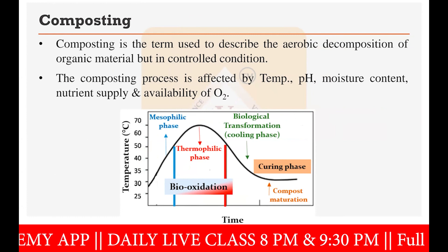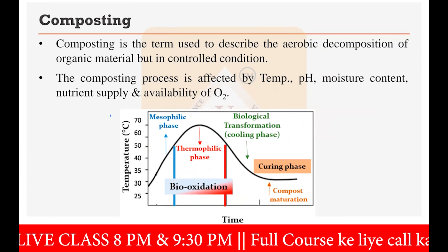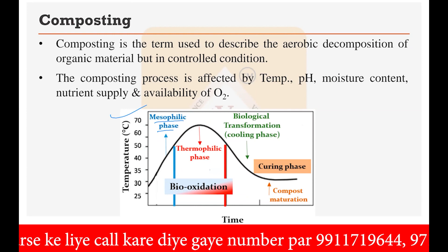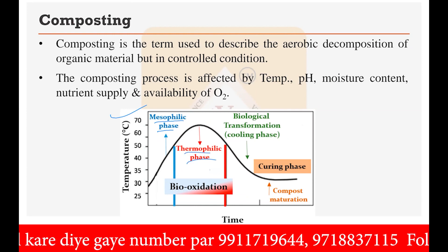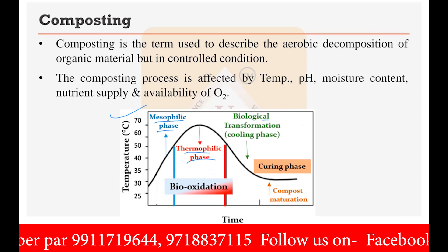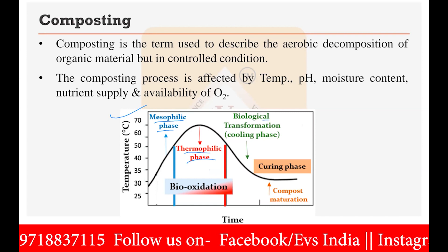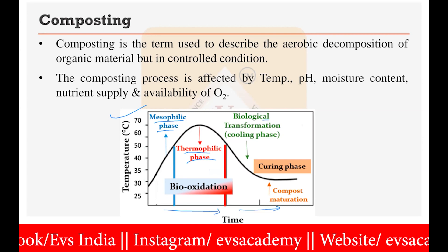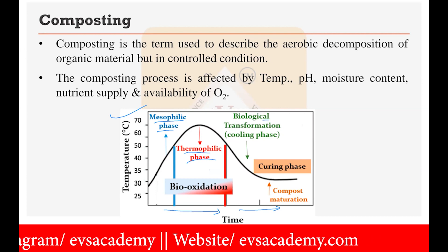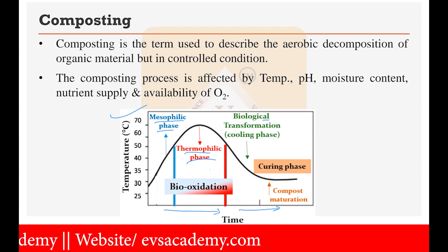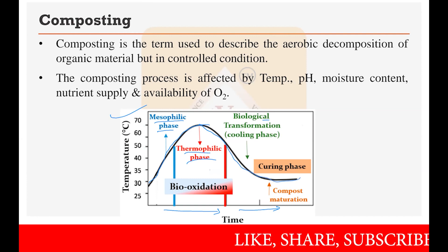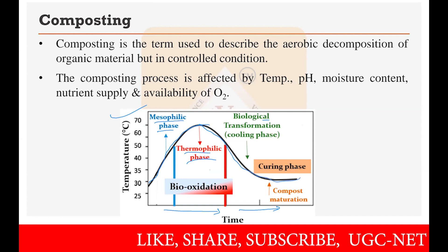Here you can see a typical composting process graph. It is divided into four categories: the mesophilic phase, the thermophilic phase, the biological transformation or cooling phase, and the compost maturation phase. The time involved can range from a few days up to two months. Initially the temperature is cool; as decomposition starts the temperature rises up to 60–70 degrees Celsius, and after that it cools down automatically.